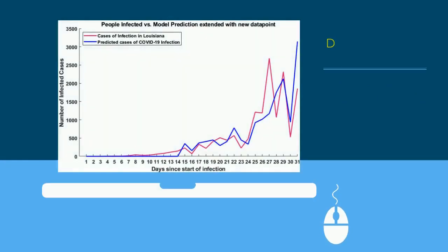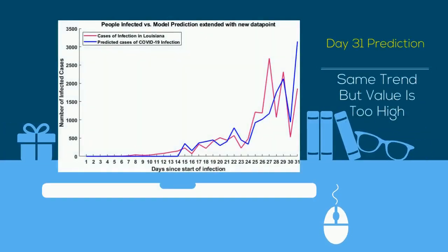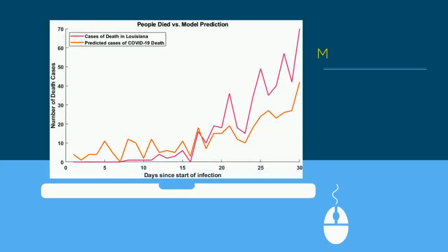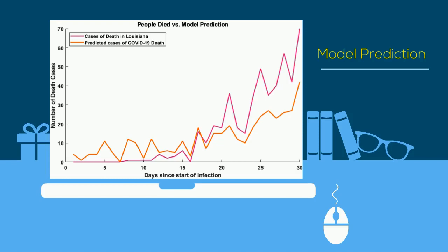This graph shows the prediction one more day ahead than the earlier graph. You can see that it still follows the same trend but the predicted value is too high. The comparison between predicted and real data cases in Louisiana shows that the trend of the two lines is very similar, but there is large variance. I think the reason for the variance is that there are many other key parameters not considered in the mathematical model.